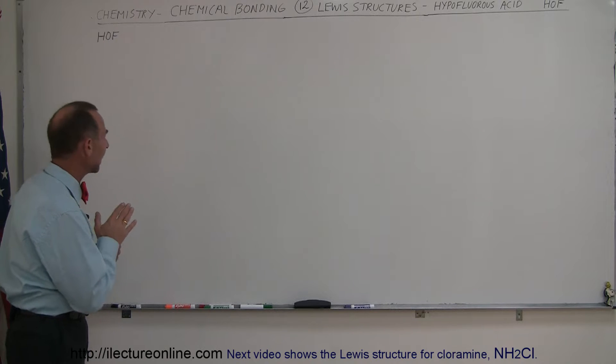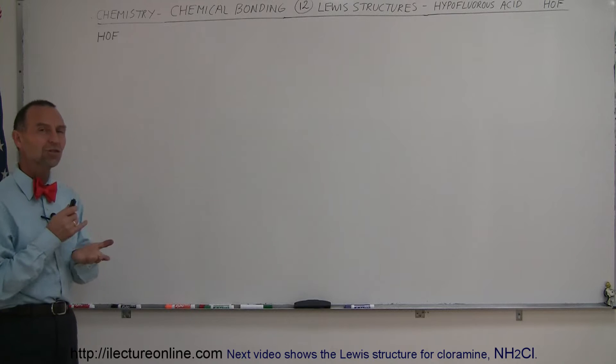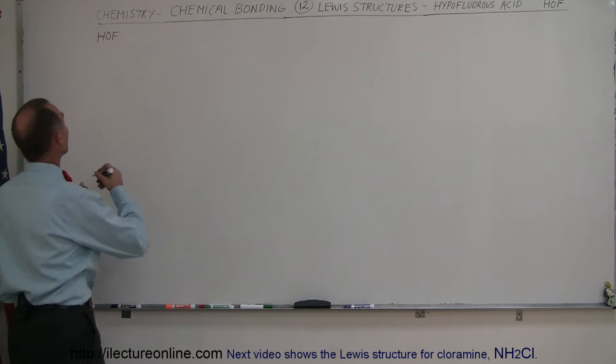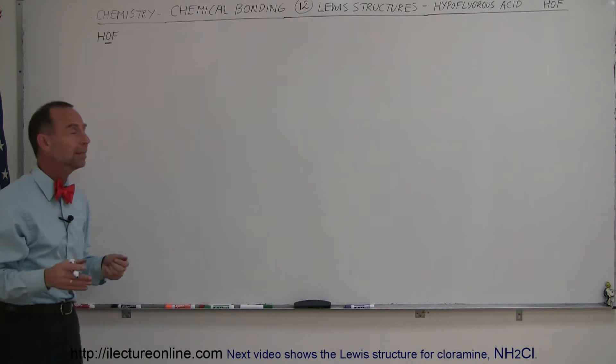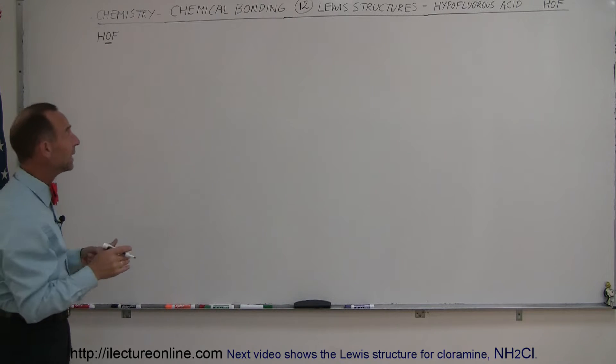So we find the atom here with the lowest electronegativity, which would be hydrogen, but hydrogen is not a good atom for a central structure. It tends to be an appendage. So we look for the next one, which would be oxygen. Oxygen has a lower electronegativity than fluorine, so we'll think that to be in the middle.